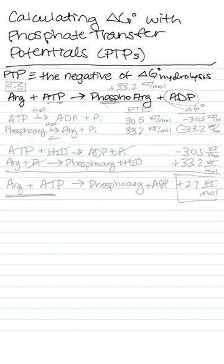So there's a term in biology called the phosphate transfer potential, since so many different reactions in metabolism involve the transfer of phosphate groups.